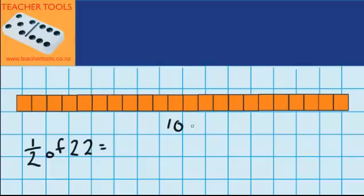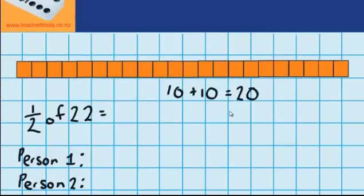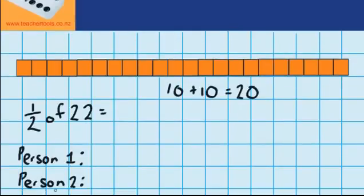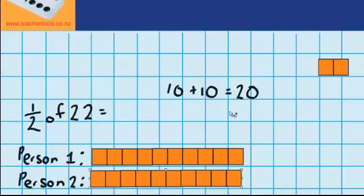I know that 10 plus 10 equals 20, so that would be a good place to start. Give each person 10 blocks. Down here I've written person 1 and person 2, and now I'm going to give each of those people 10 blocks. So there are 10 blocks for person 1 and 10 blocks for person 2.